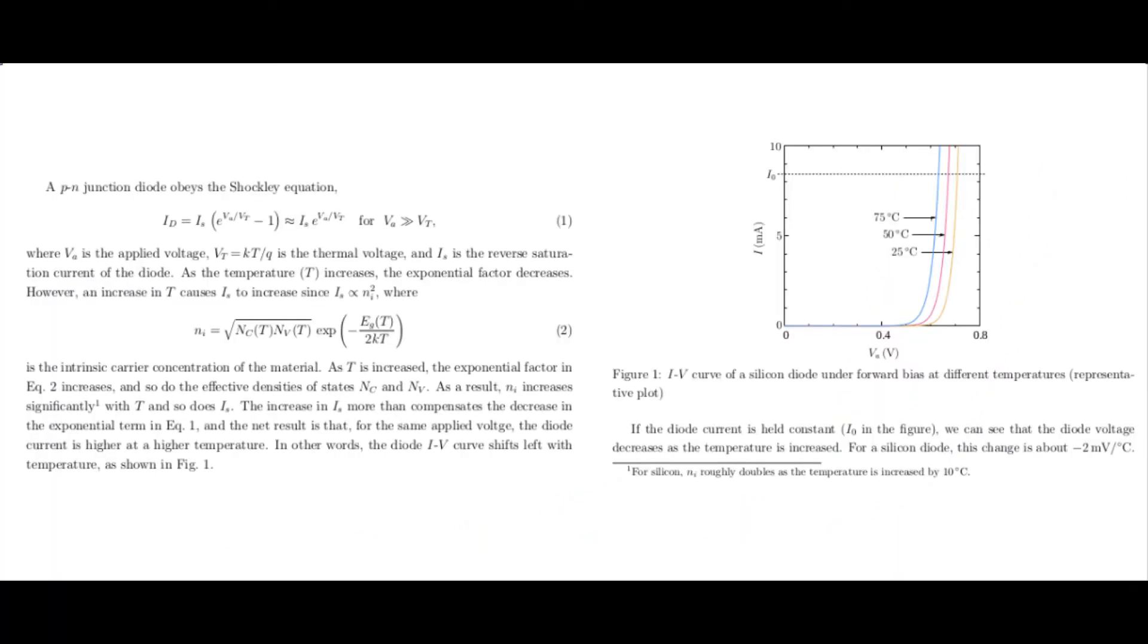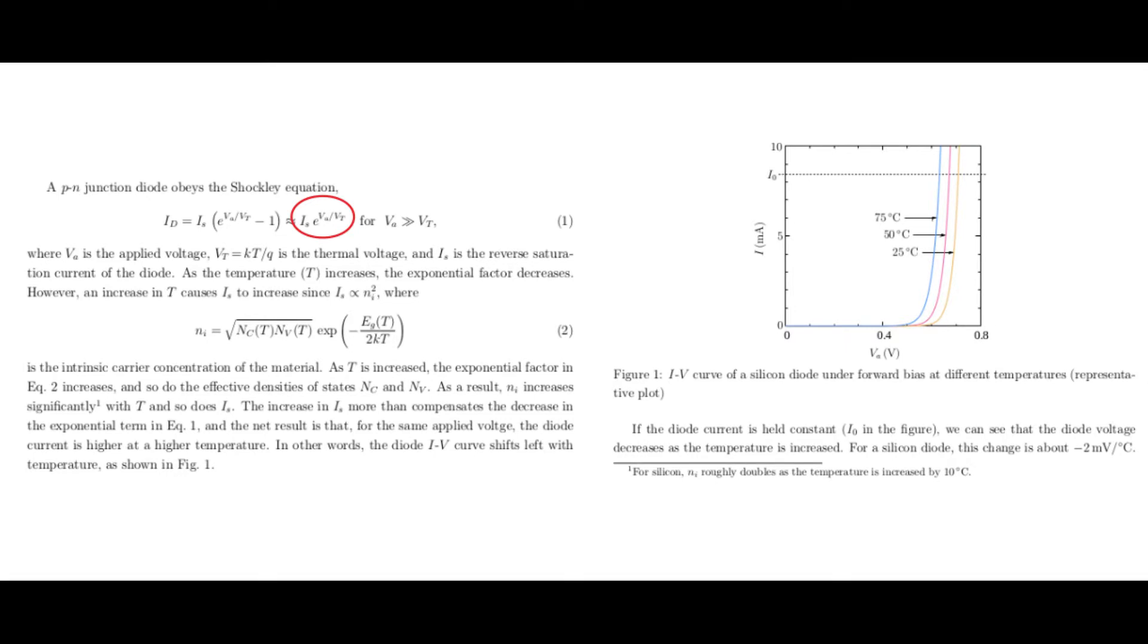So here is the Shockley diode equation, which shows the exponential dependence of the current on voltage. And it is, as I said, dependent on that carrier concentration, that intrinsic carrier concentration, which is competing with the exponential to somehow make this dependence on temperature linear.